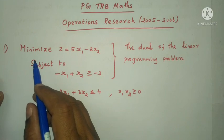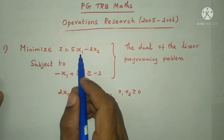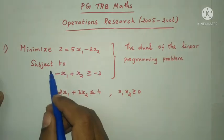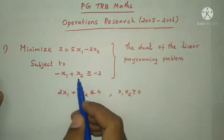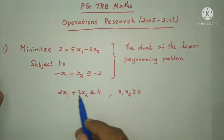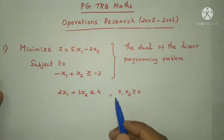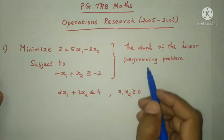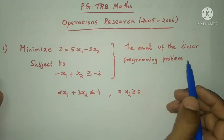First question: Minimize z equal to 5x1 minus 2x2, subject to the constraints: minus x1 plus x2 greater than or equal to minus 3; 2x1 plus 3x2 less than or equal to 4; where x1, x2 greater than or equal to 0. Find the dual of the linear programming problem.